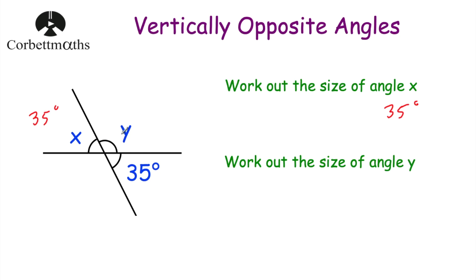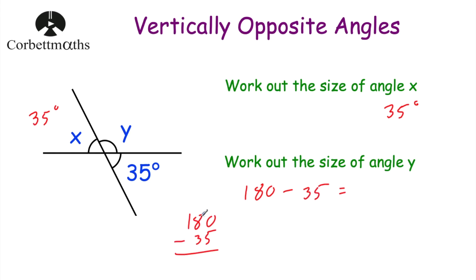Next we've been asked to work out the size of angle y. One way is to look at this straight line — these two angles will add up to be 180 degrees. So if we take 35 degrees away from 180 degrees we can find angle y. So 180 degrees subtract 35 degrees: zero take away five, we borrow, giving us ten take away five is five; seven take away three is four; one take away zero is one. So that's 145 degrees. Because this is a straight line, angle y would be 145 degrees.